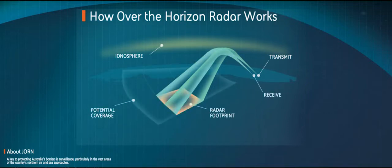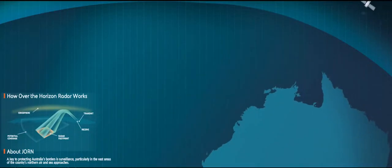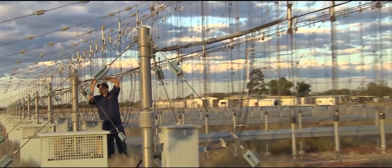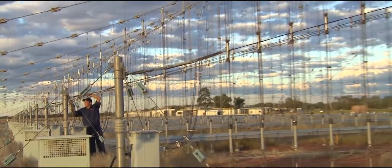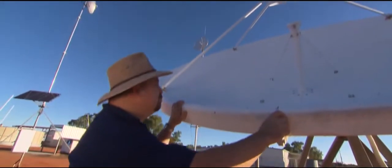This allowed them to detect ships and aircraft at distances well beyond those achieved by conventional microwave radars. In 1991, a contract was awarded to build two operational over-the-horizon radars to Telstra and GEC Marconi, who were later acquired by BAE Systems.